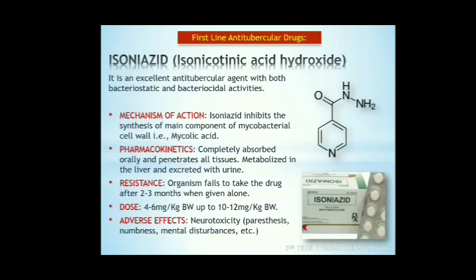First line anti-tubercular drugs. The first drug is isoniazid. It is a hydrazide of isonicotinic acid and an excellent anti-tubercular agent with both bactericidal and bacteriostatic activity. It is primarily tuberculocidal — fast-multiplying organisms are killed but dormant ones are only inhibited. Most non-tubercular mycobacteria are not inhibited by isoniazid. Its mechanism of action is inhibition of mycolic acid synthesis, which is a unique fatty acid component of the mycobacterial cell wall.